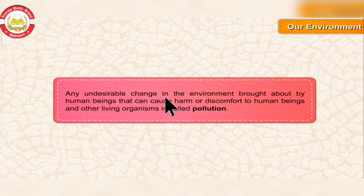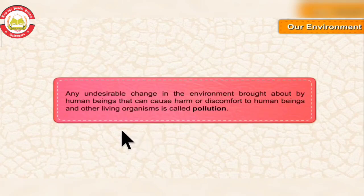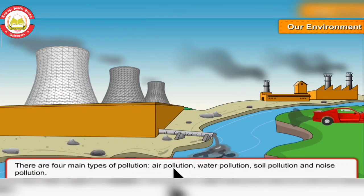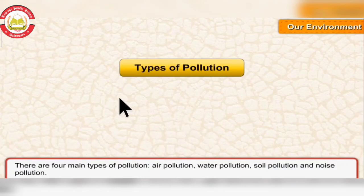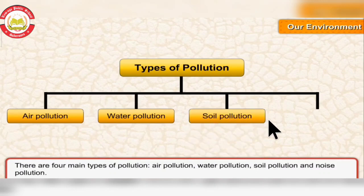Any undesirable change in the environment brought about by human beings that can cause harm or discomfort to human beings and other living organisms is called pollution. The substance that causes pollution is called a pollutant. There are four main types of pollution: air pollution, water pollution, soil pollution, and noise pollution.